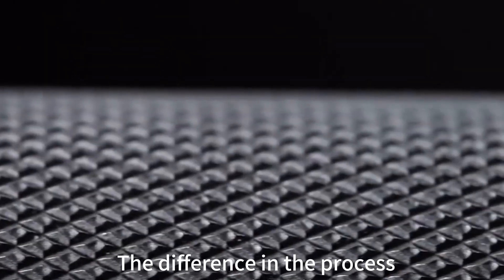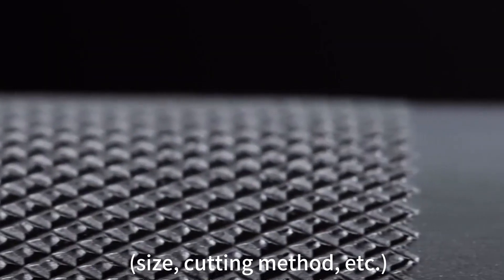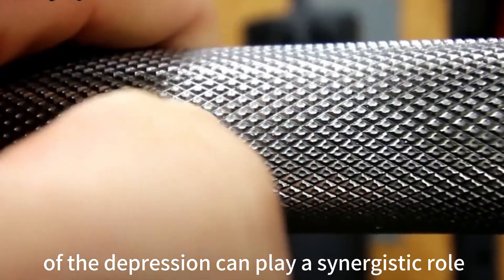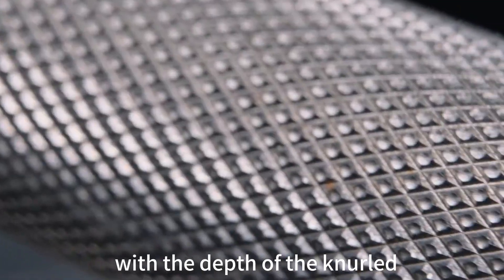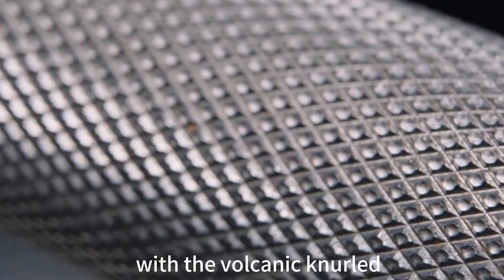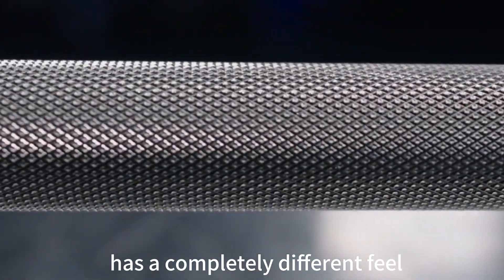The differences in the process, size, cutting method, etc., after the pressure, can play a synergistic role with the depth of the knurl, so that the barbell bar with the volcanic knurl has a completely different feel.